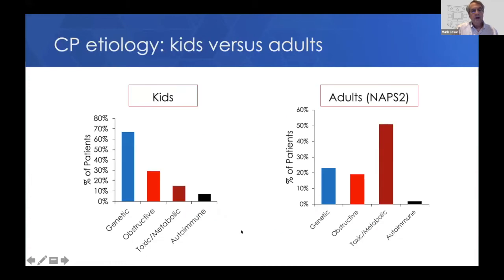The etiology in kids is frequently related to genetic risk factors. Comparing with the NAPS-2 study in adults, genetic factors are two-thirds of kids, and I think it's going to be close to three-quarters. Obstructive causes include congenital things like anomalous pancreatic biliary insertion. Toxic-metabolic causes are much less common in kids than in adults — mostly because smoking and alcohol are included in that adult category. We do see some autoimmune disease.